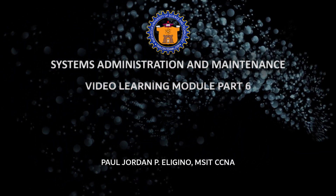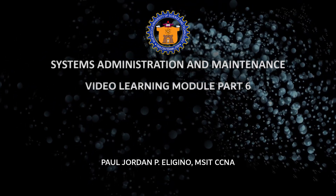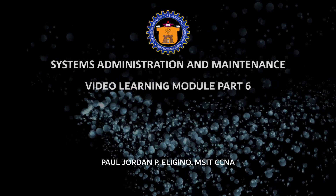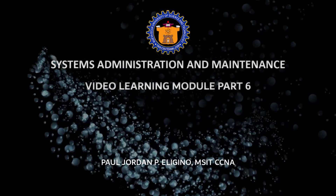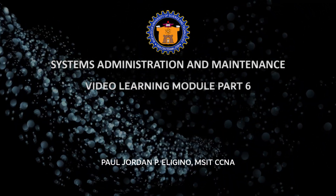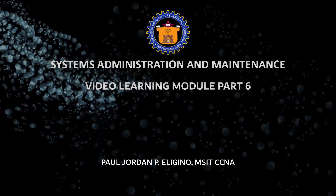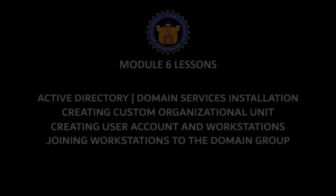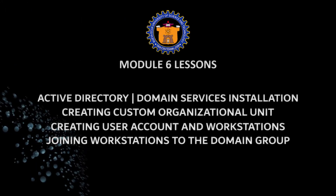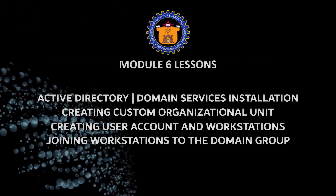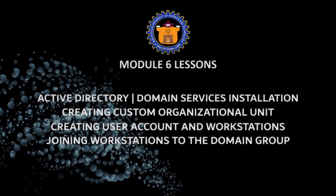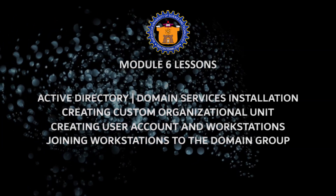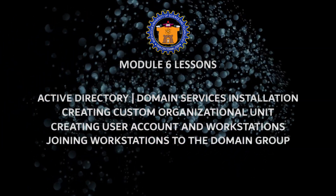A domain controller is a special server that manages logins and security. Active Directory, on the other hand, is the system that stores all the information about users, computers, groups and resources. Together, Active Directory and the domain controller provide centralized management, making networks more secure and easier to manage. In short, Active Directory is the database, and the domain controller is the server that enforces the rules.